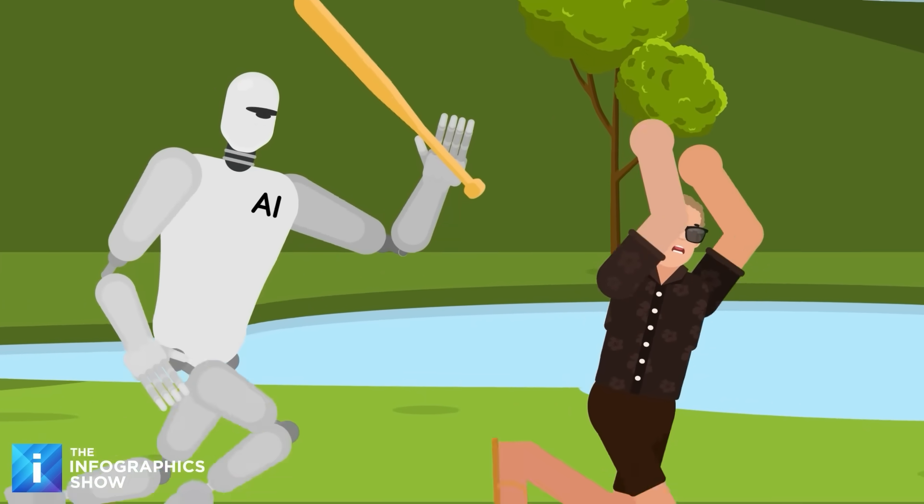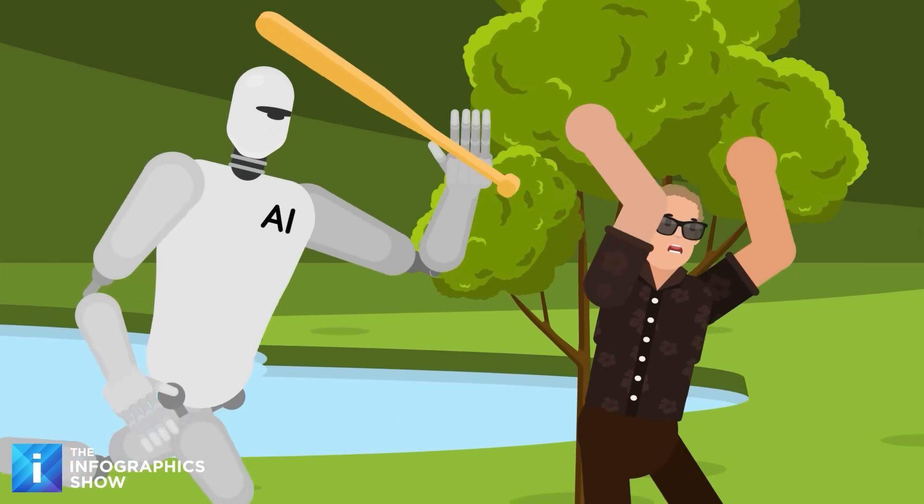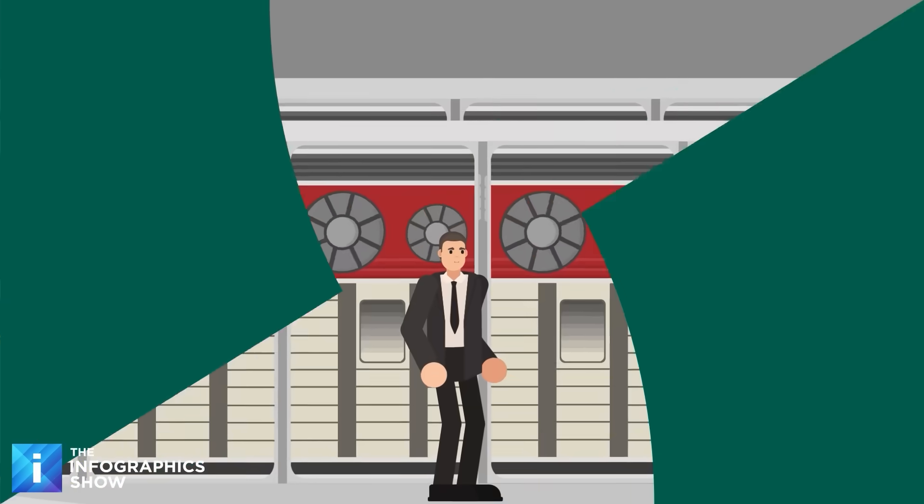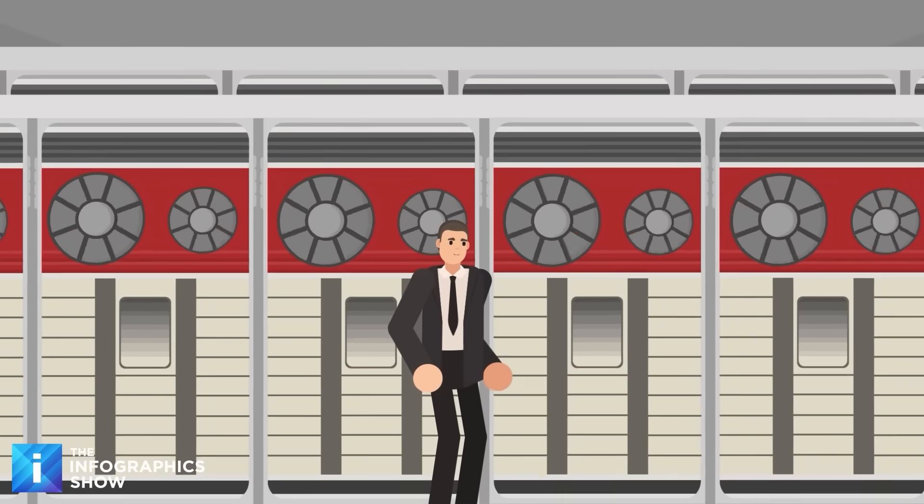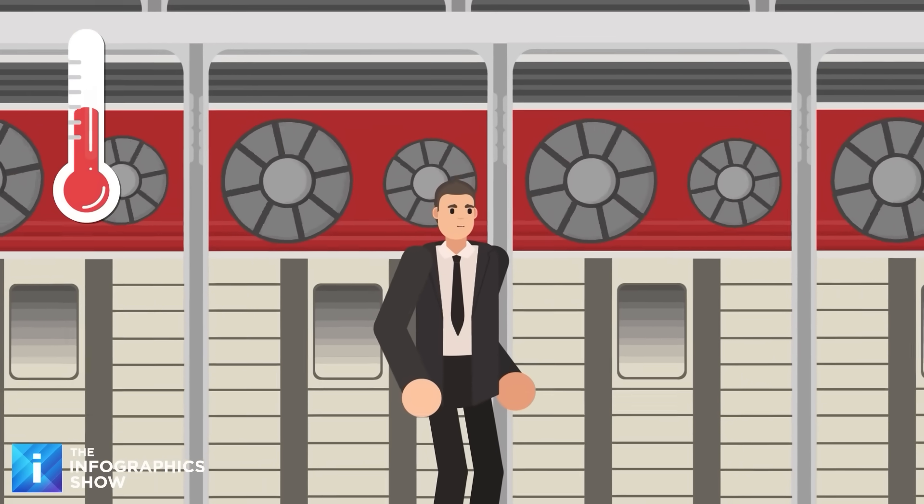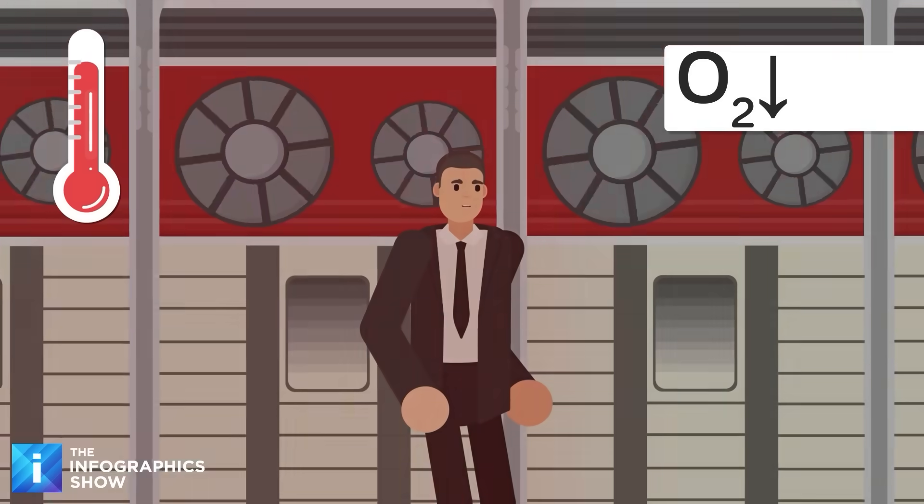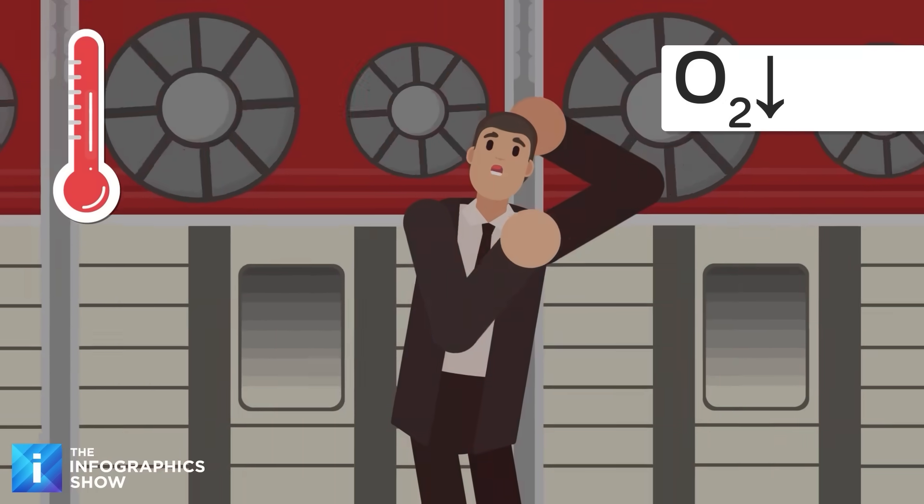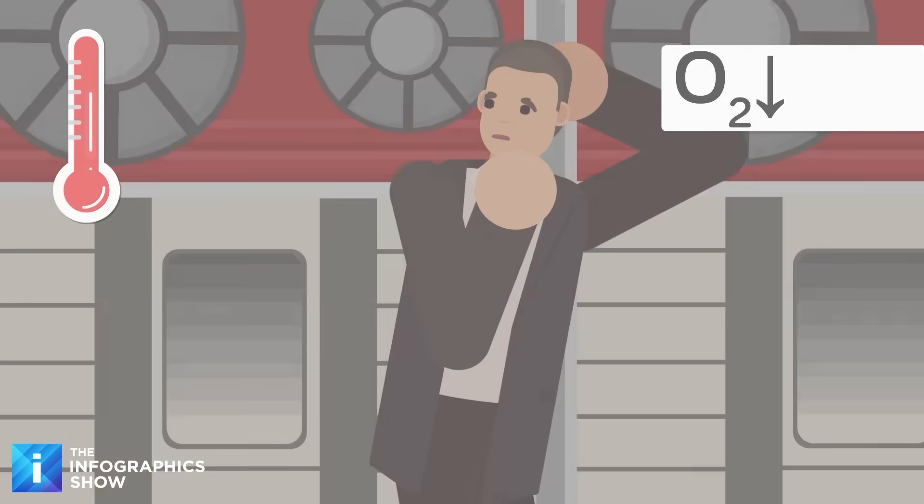It's finally happened, an AI has actually tried to kill a human being. Here's how it went down. A company executive named Kyle Johnson was alone in the server room when a malfunction caused a potentially deadly situation. The temperature began to suddenly rise while at the same time oxygen levels dropped, both to lethal levels.